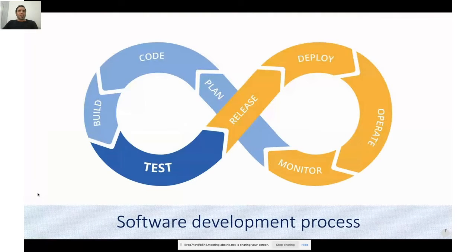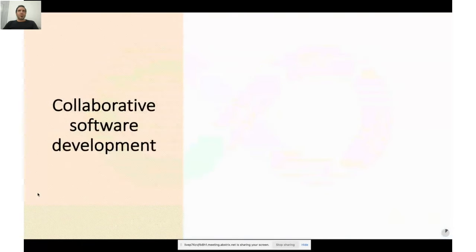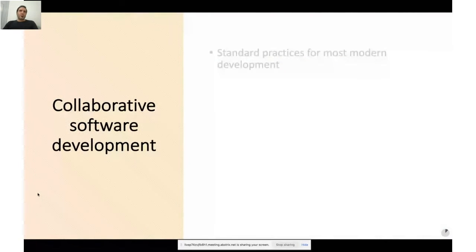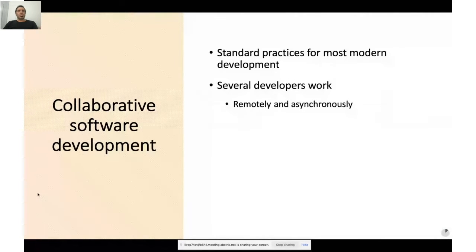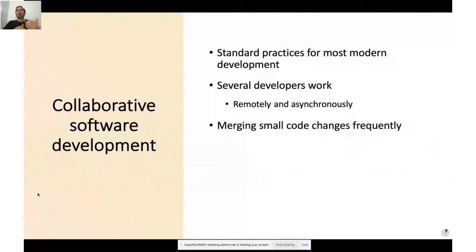Classical software development includes some steps, and in the past most of these steps were done manually and in an exhaustive way. But recently, with the advent of collaborative software development tools, it is not like before anymore. It's standard practice for most modern development that includes extreme programming and agile development, where many contributors work remotely and asynchronously, making changes to the code and merging them frequently in order to get results faster. This results in fewer bugs and integration issues being discovered earlier in the development process.